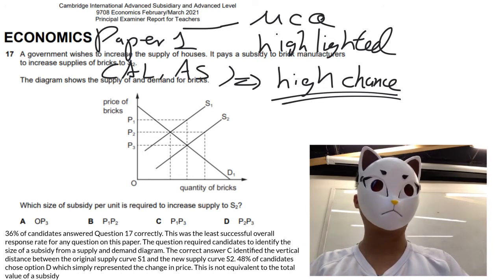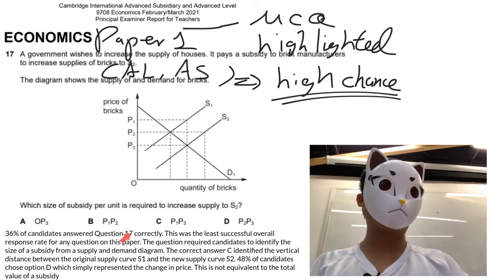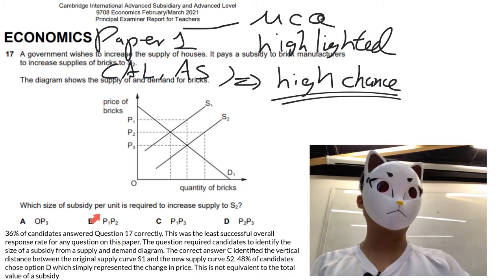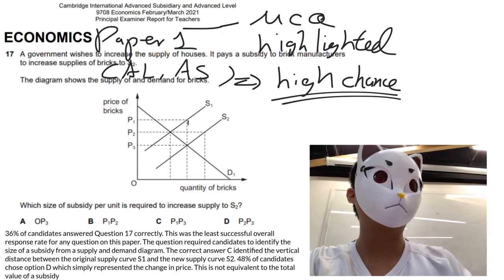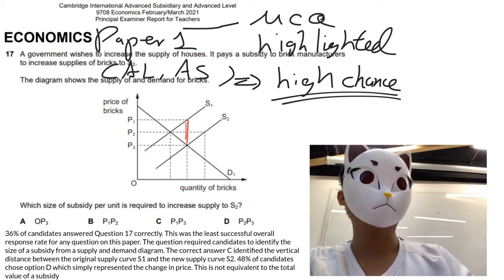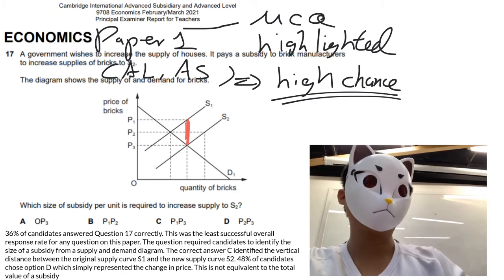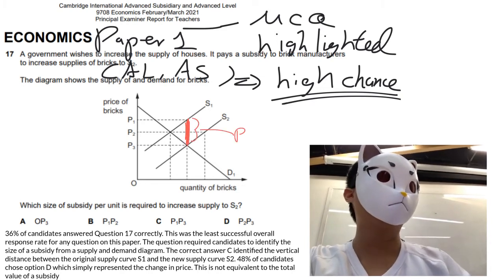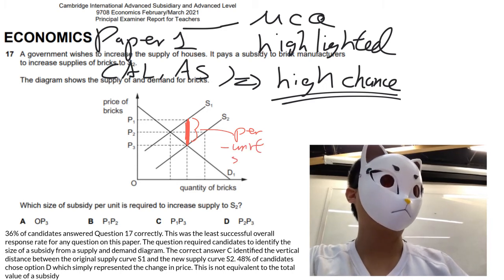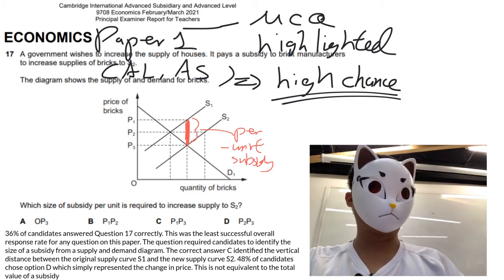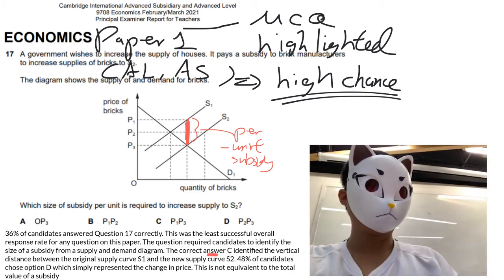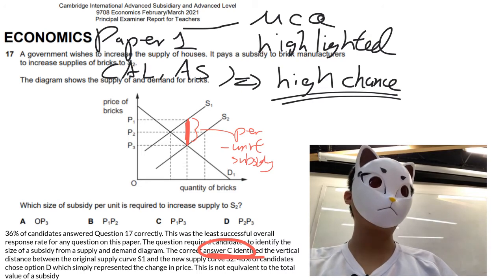The first question highlighted by the authority is question 17. Question 17 asks about the subsidy per unit. As you can see, from S1 to S2, this one would be the per unit subsidy. So the answer would strictly go to C.